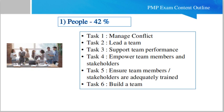The People domain contains different tasks. Task 1: manage conflicts between different stakeholders and team members. Task 2: leading a team from the front. Task 3: support team performance wherever they need support. Task 4: empower team members and stakeholders by your attitude. Task 5: ensure team members and stakeholders are adequately trained, whether through online or on-site training.